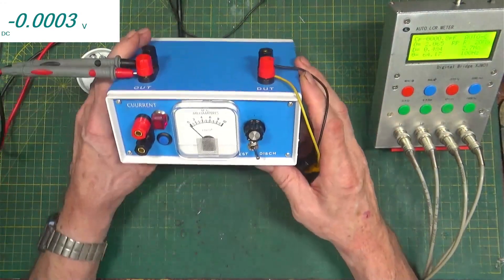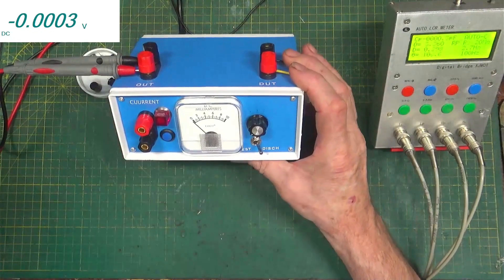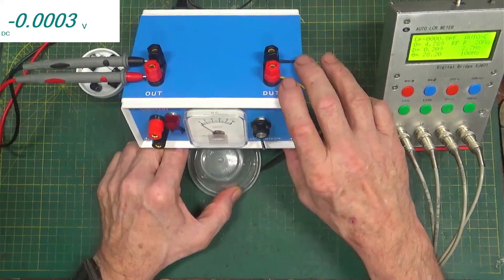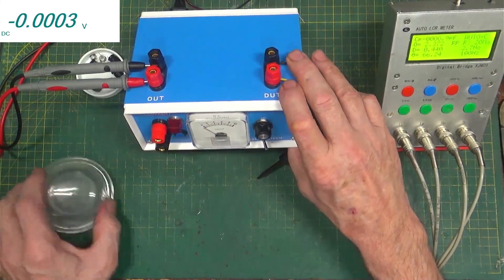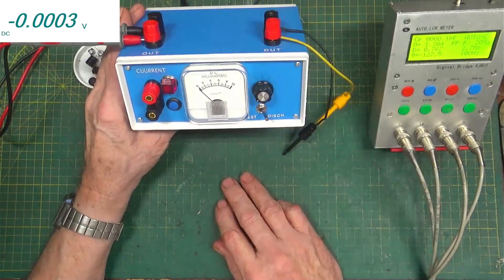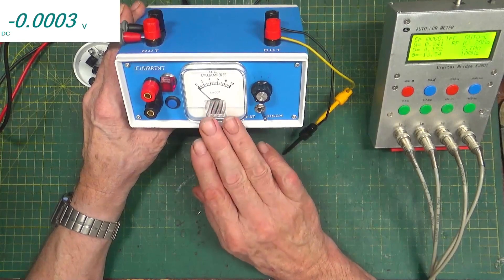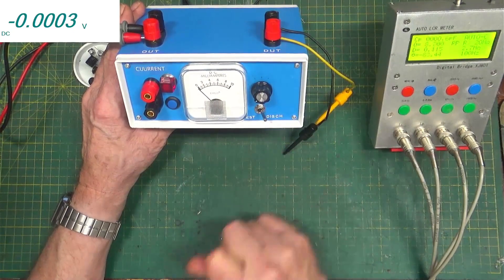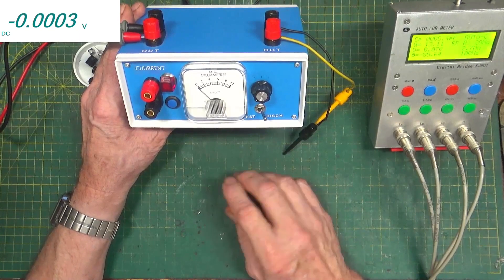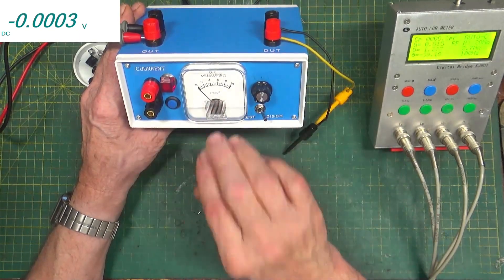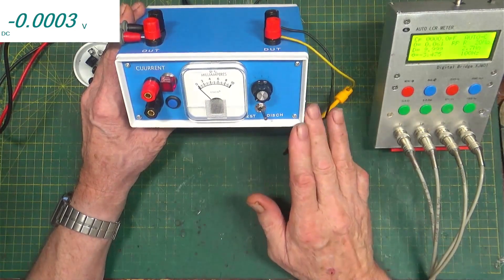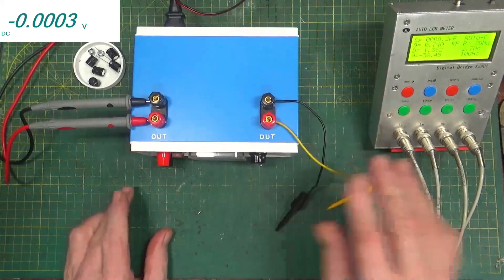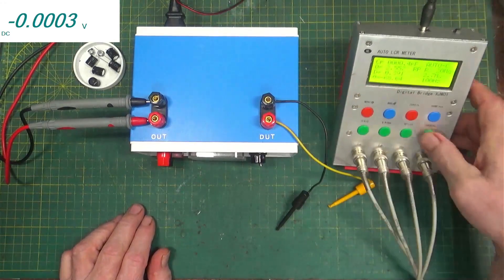What we're going to do is test this thing. This is specifically designed for measuring capacitors at voltage rather than for current or ESR or leakage, well it is leakage but at voltage.